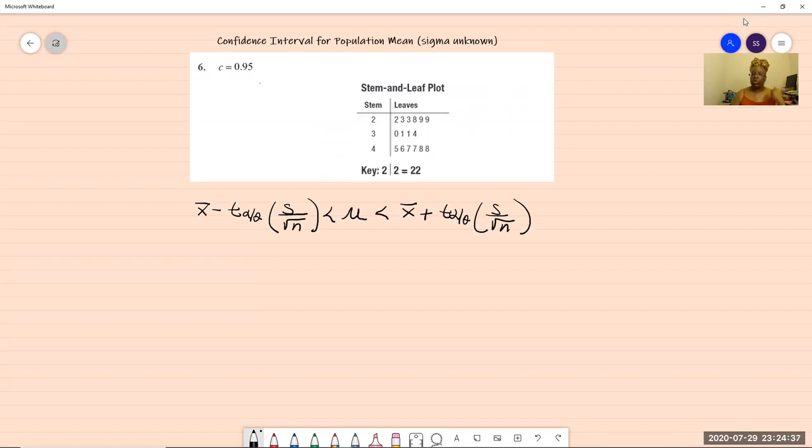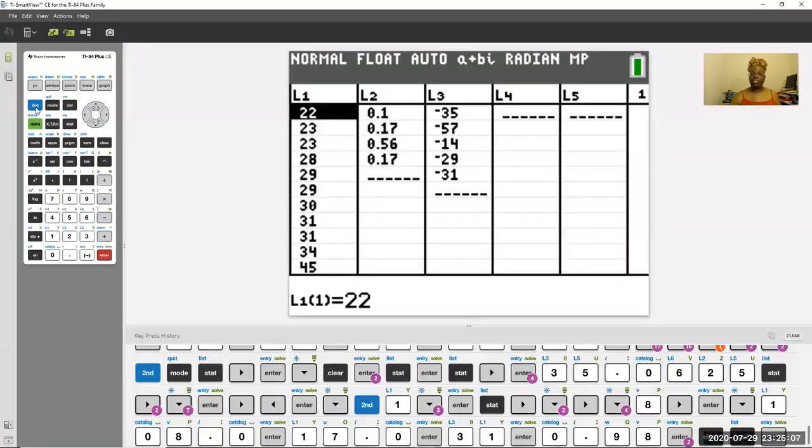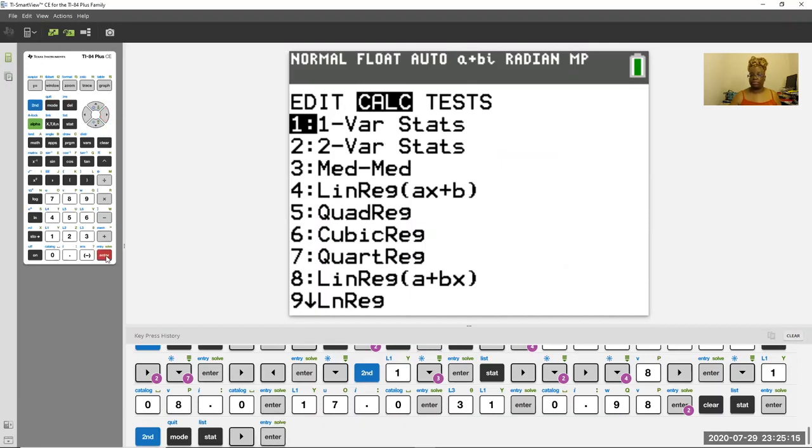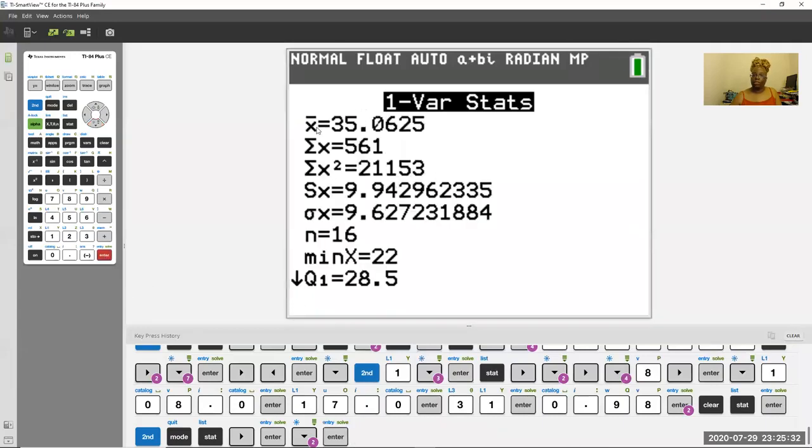So the good thing about formulas is we know what we need. We know that we need an X bar, we know we need a T alpha over two, we know we need an S and we know we need an N. So let's start with the first one, which is X bar. After you've input all your numbers from your stem and leaf plot, you go back to your calculator and I'm just going to do the basic mode. So I'm going to just go to stat, calculate, and just use one variable statistics. And you see my list is in L1. Please don't have anything in frequency list.